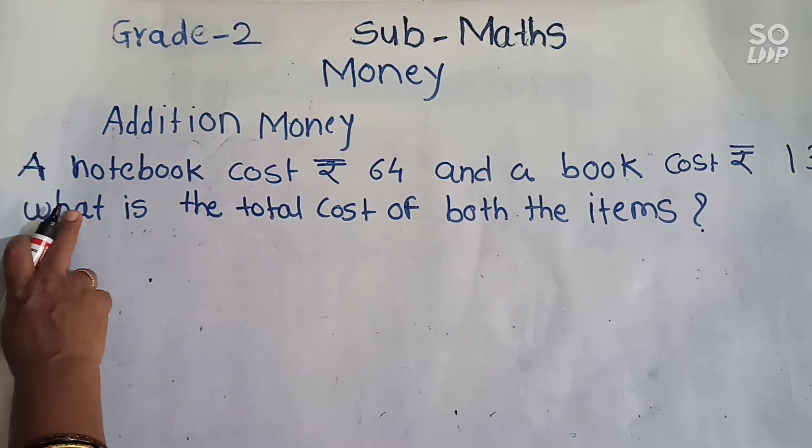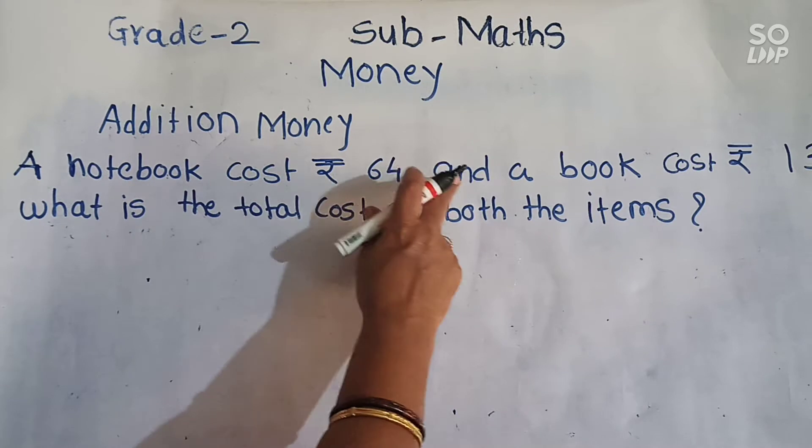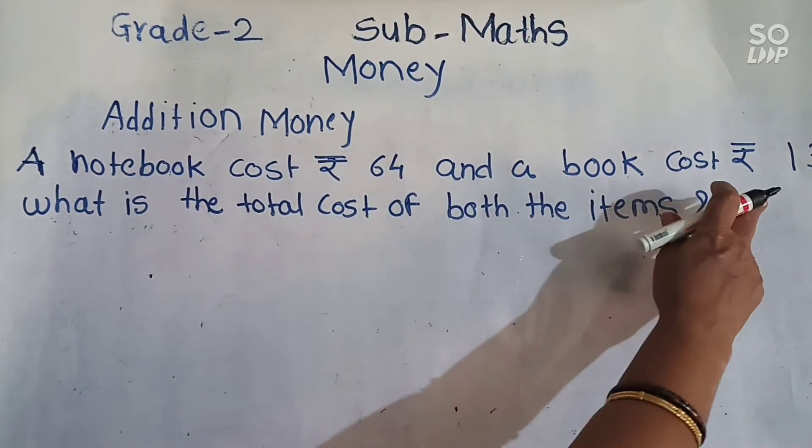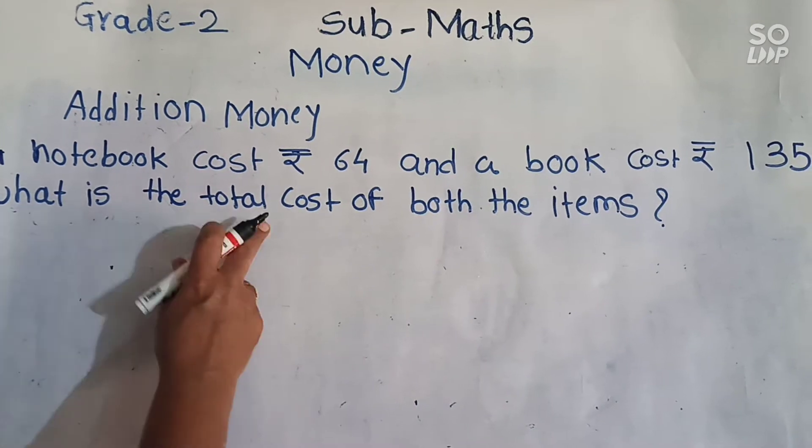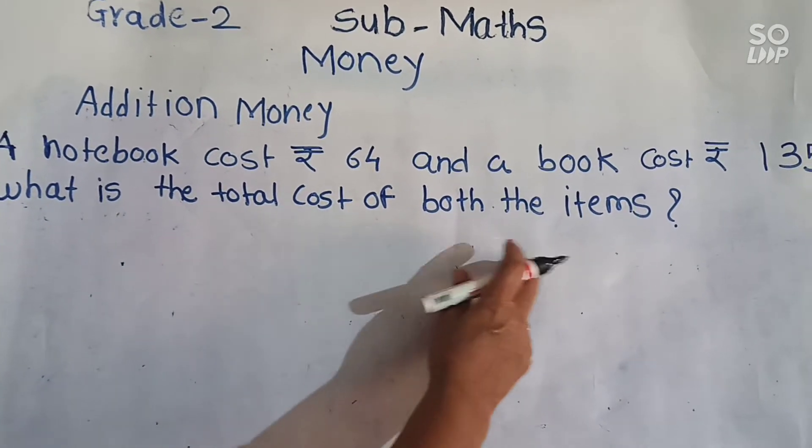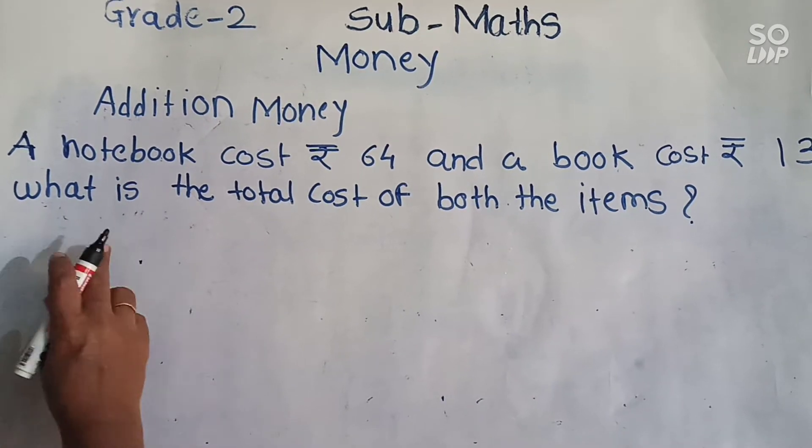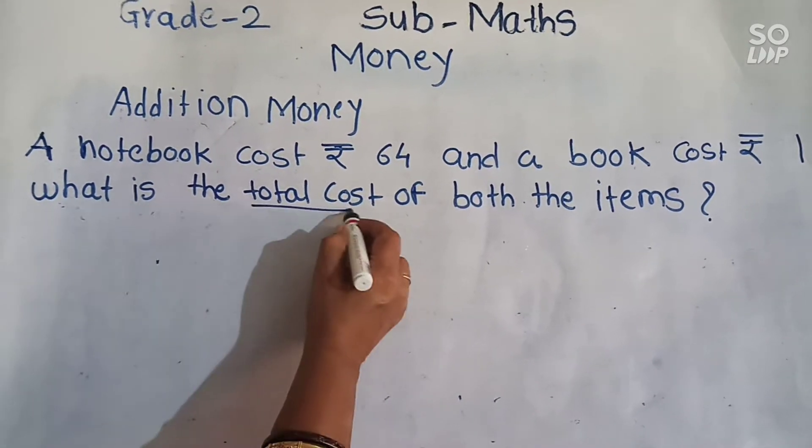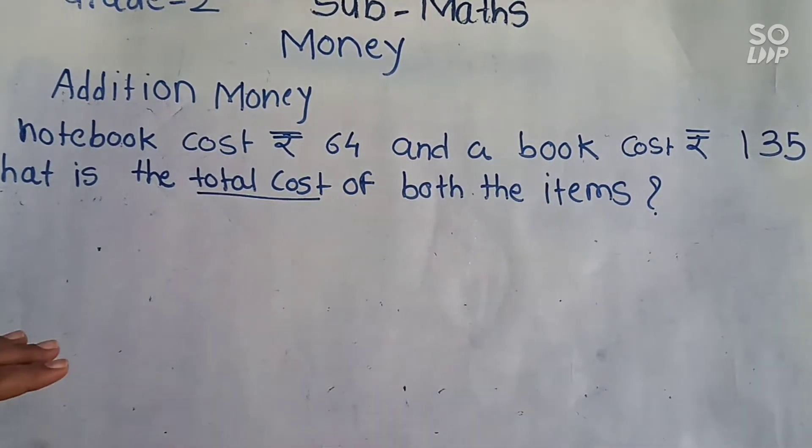Look here. Here is an example. A notebook cost rupees 64 and a book cost rupees 135. What is the total cost of both the items? So here we have to find out the total cost of notebook and book.